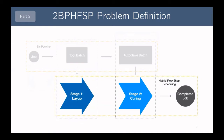We can also see how scheduling activities in two stages — both of which are multi-capacity and have precedence — can be considered a hybrid flow shop scheduling problem. Hence the title: two-stage bin packing and hybrid flow shop scheduling.